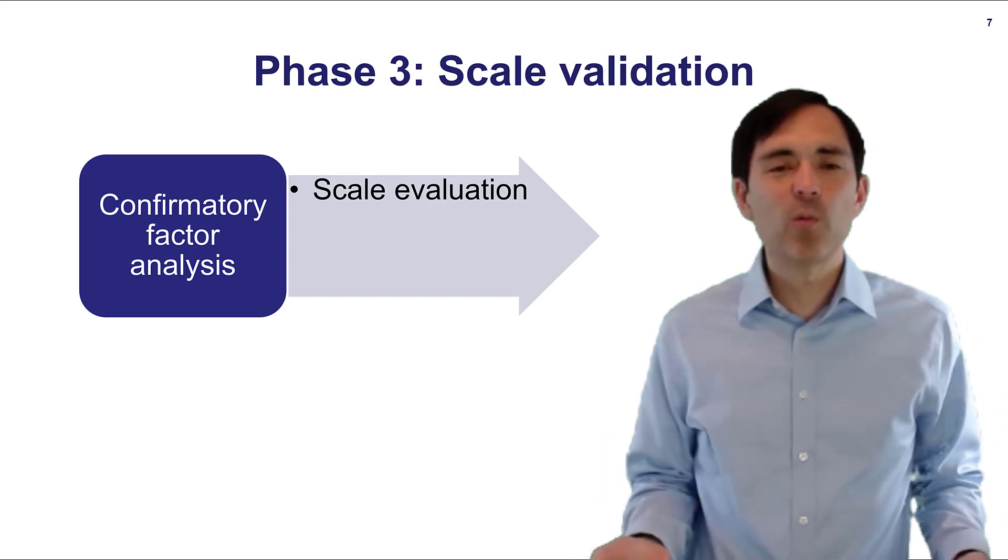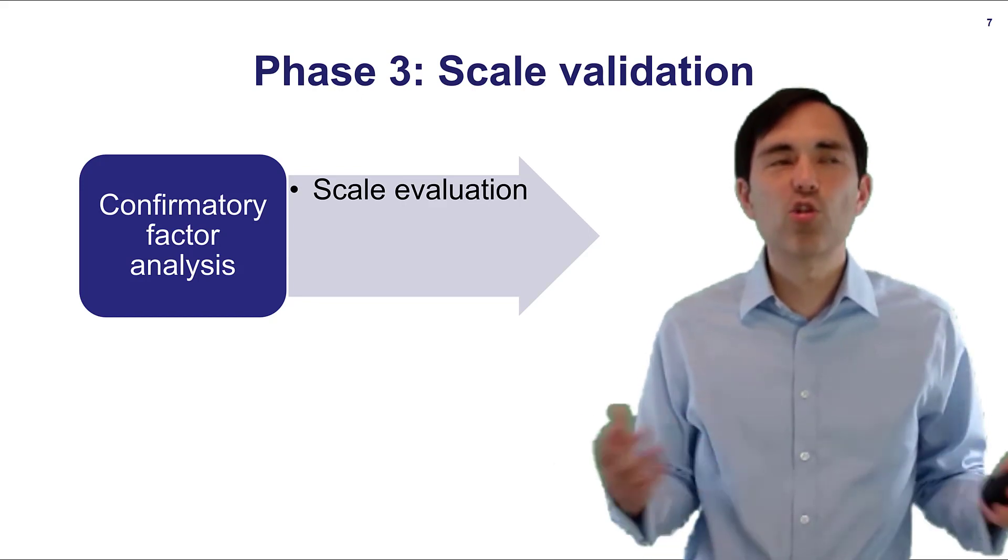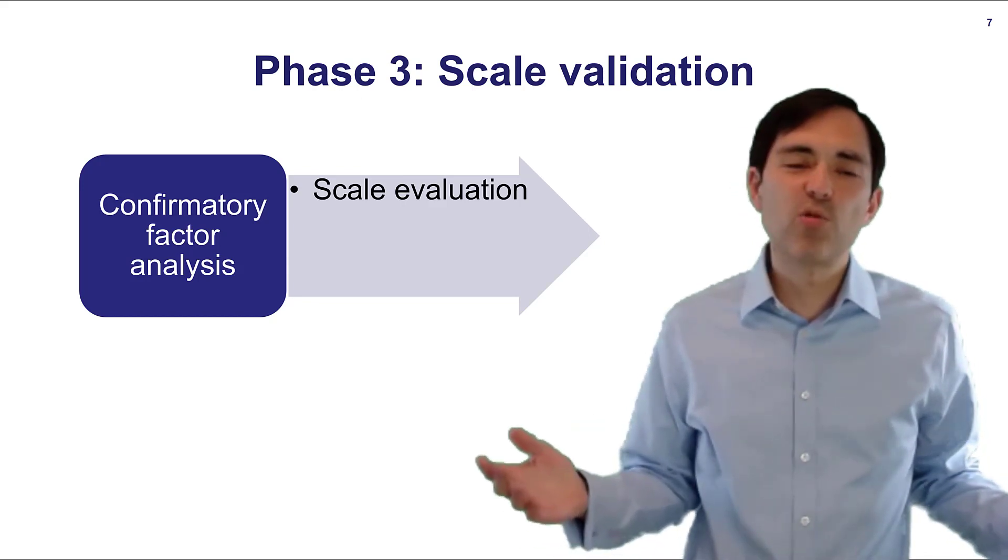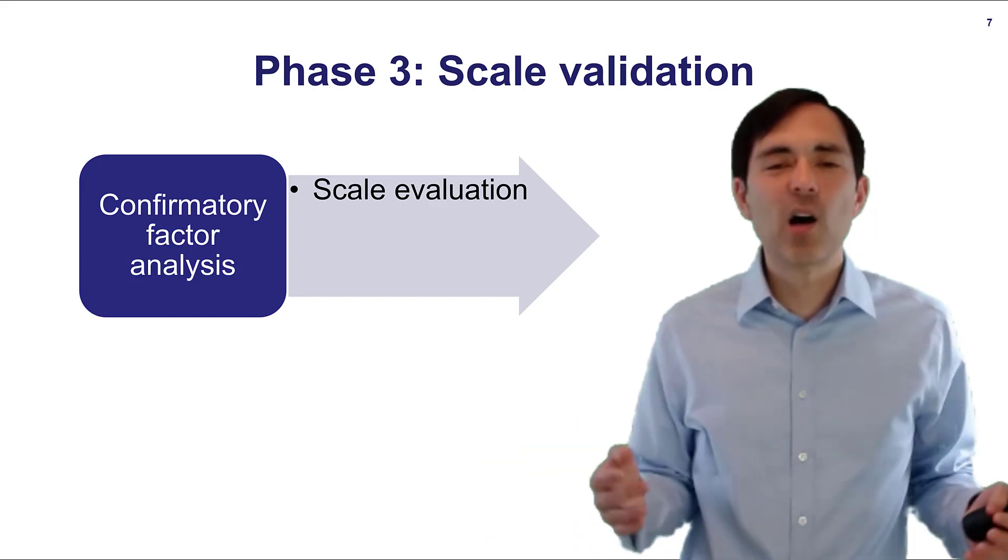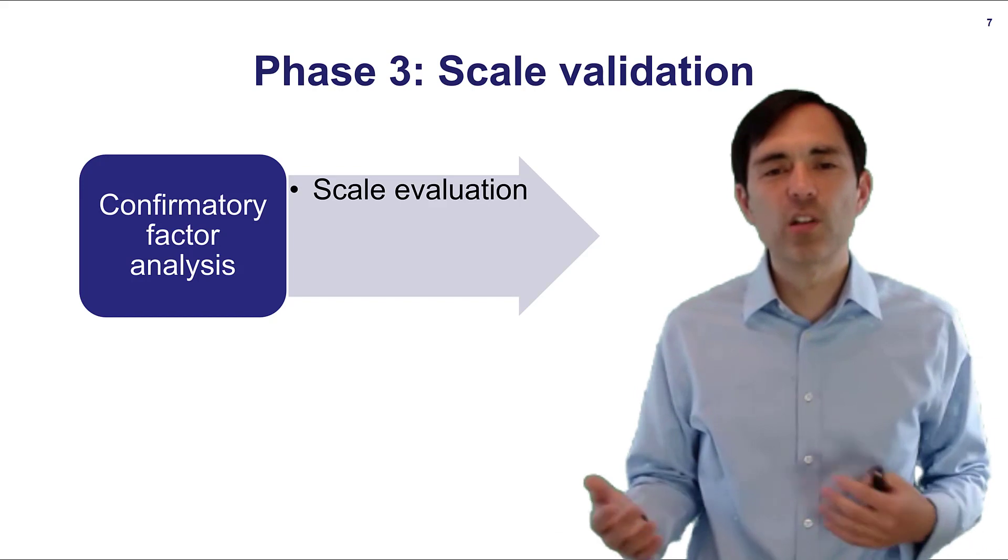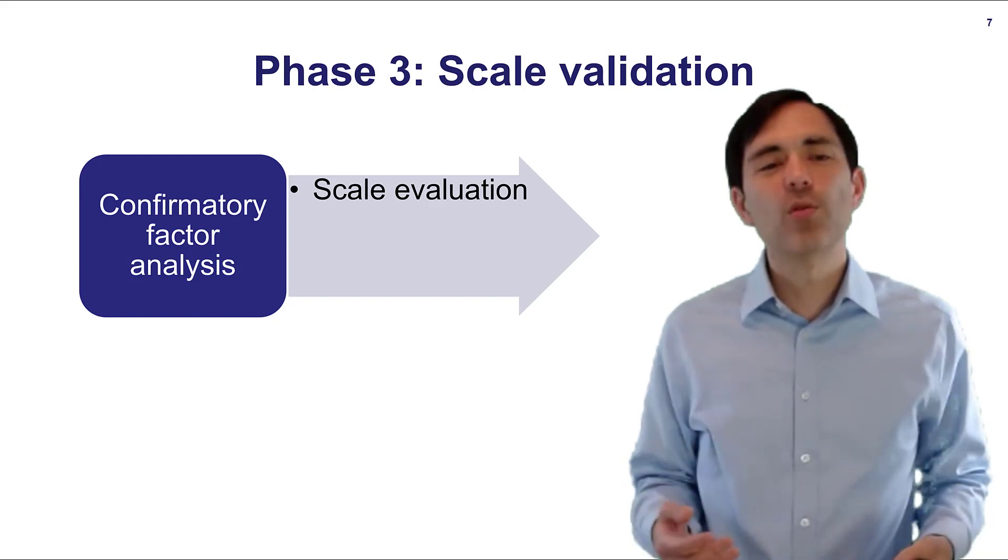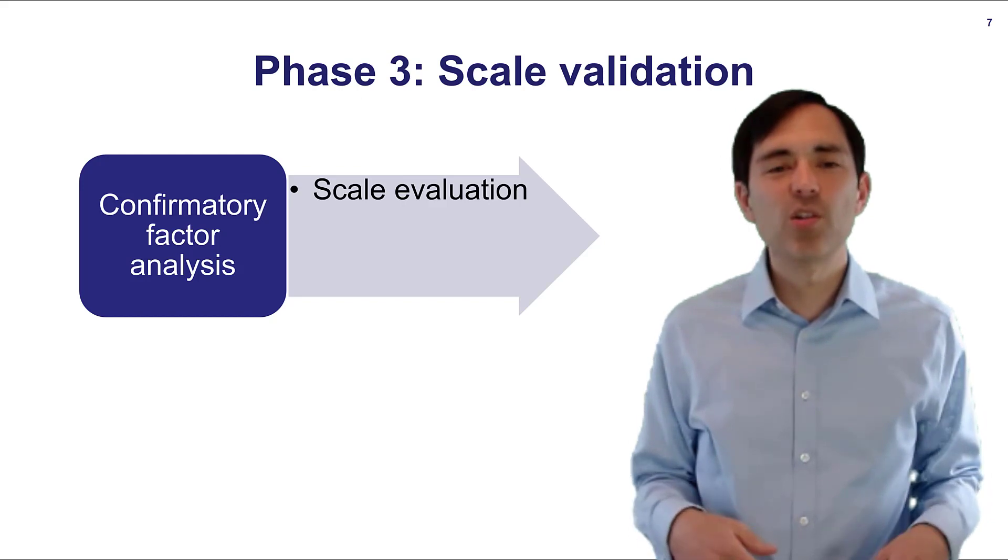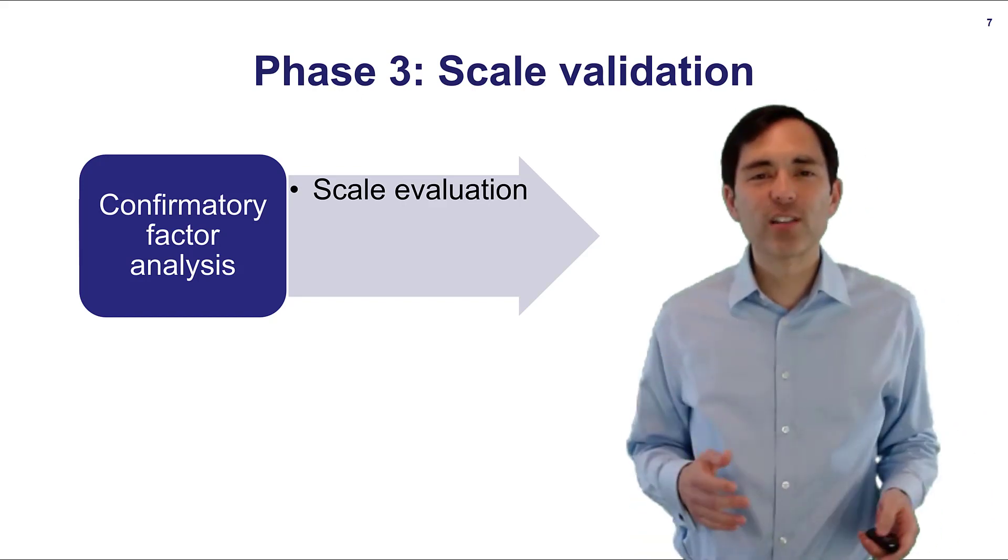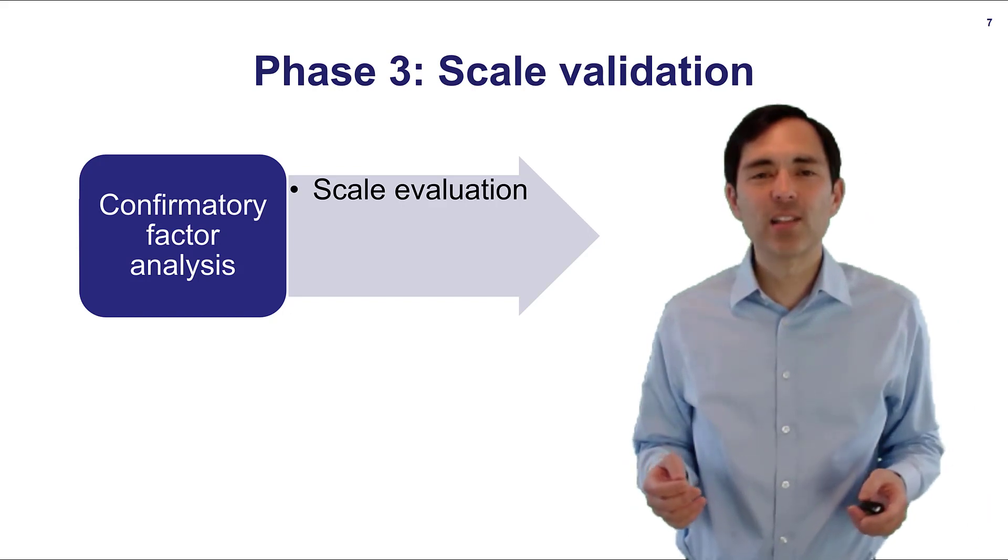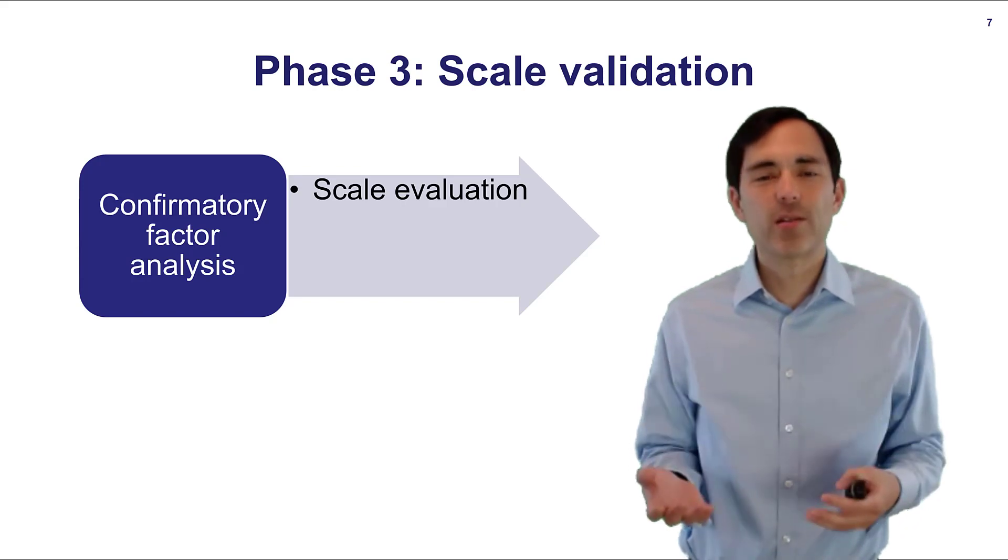Typically what we would do is then we collect another sample, pilot study two maybe. At least 200 or maybe 300 respondents should participate. We have now a reduced number of items maybe even a reduced number of dimensions and we would then provide this list of items to our new sample to evaluate the scale. In contrast to exploratory factor analysis we force all items into their respective dimensions.